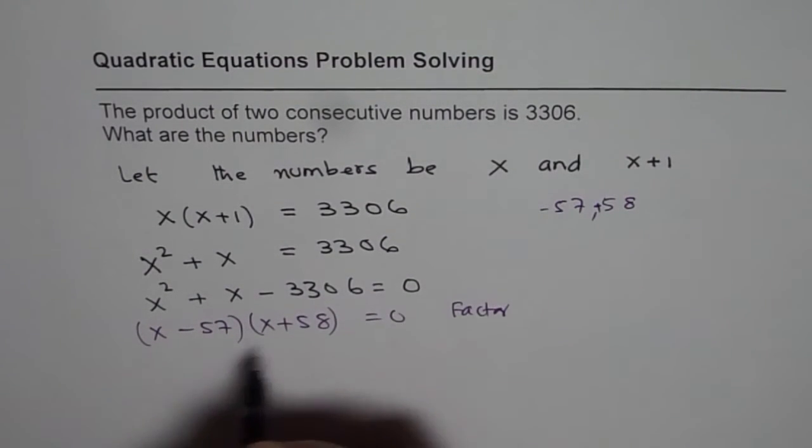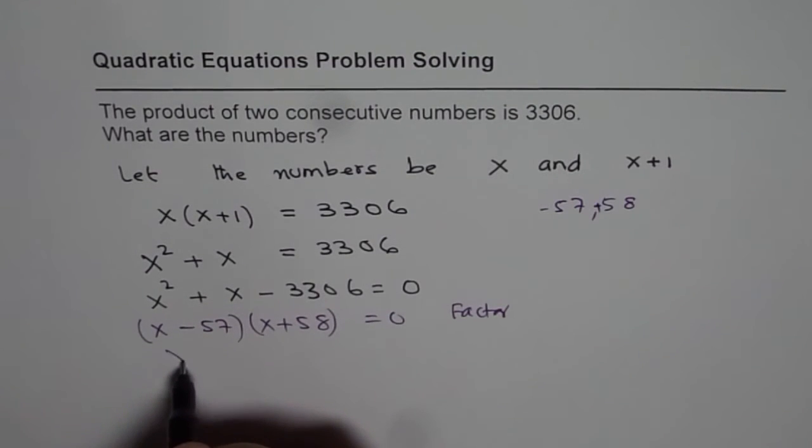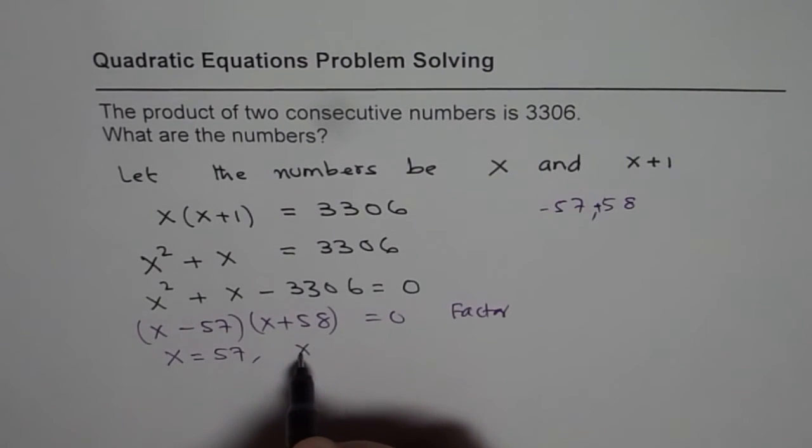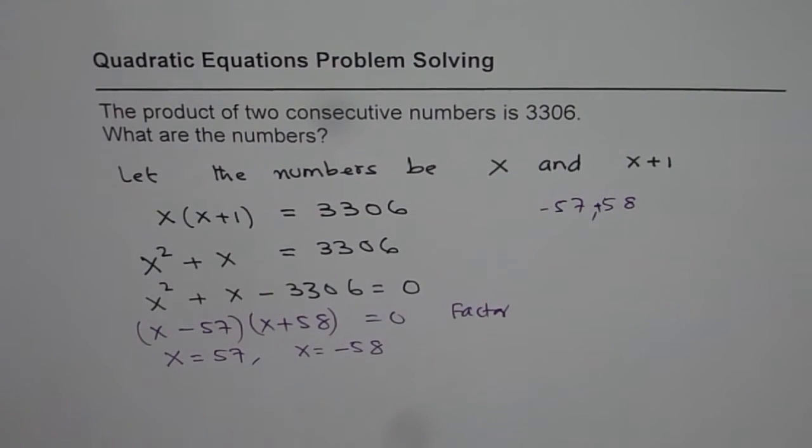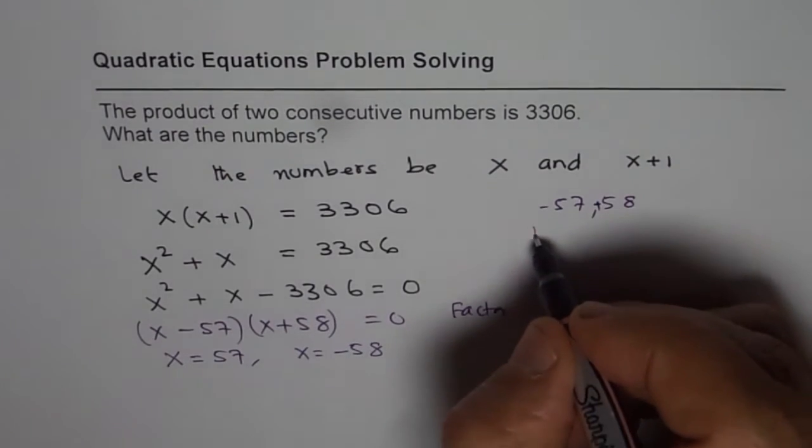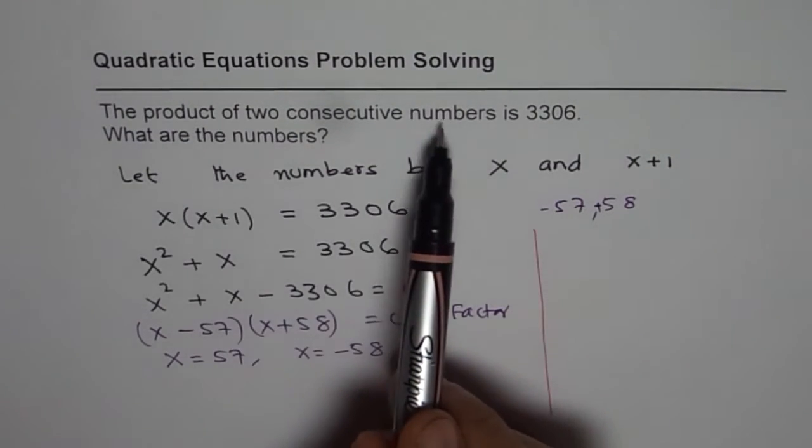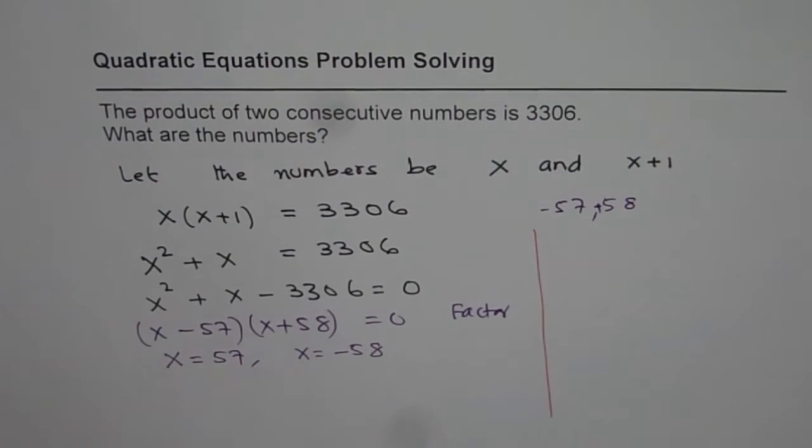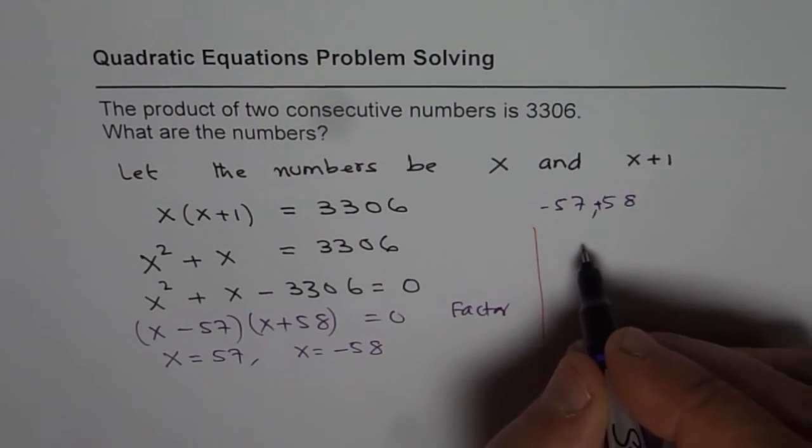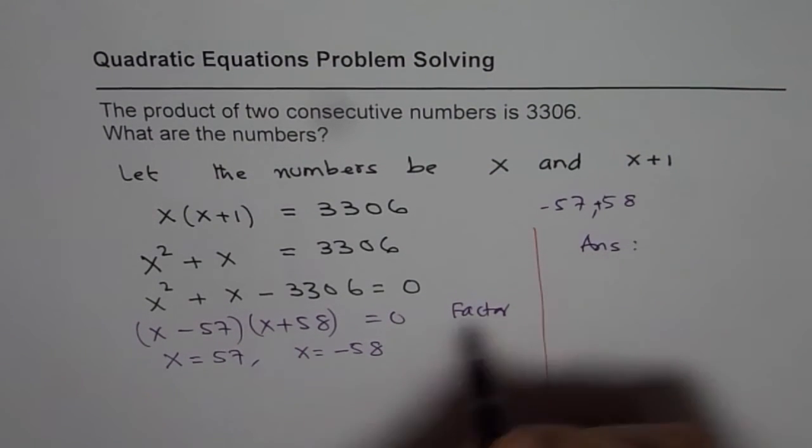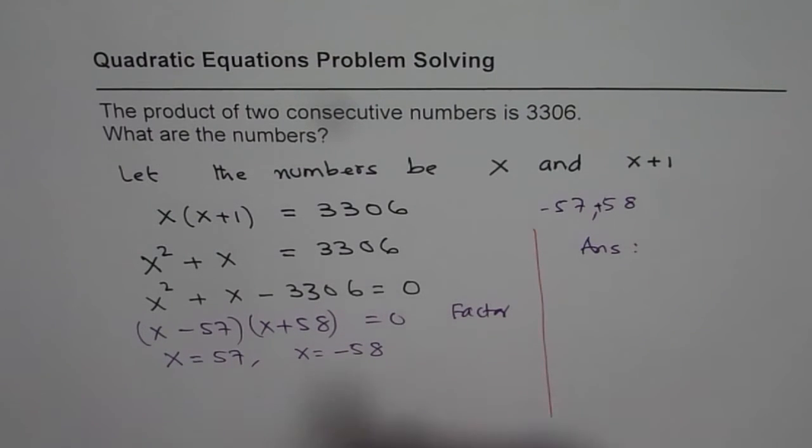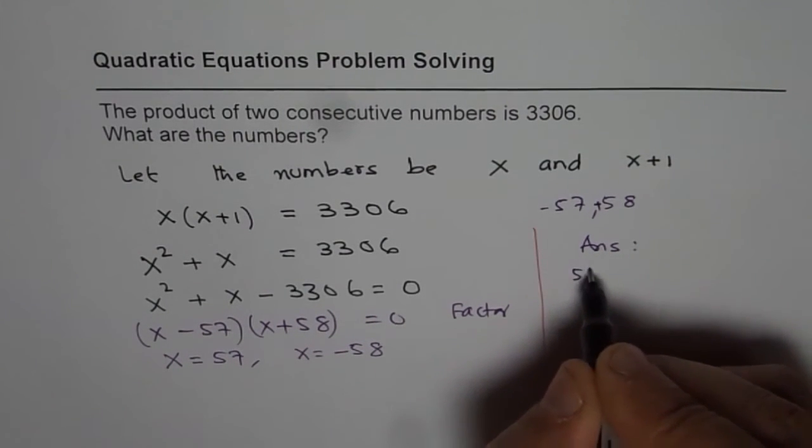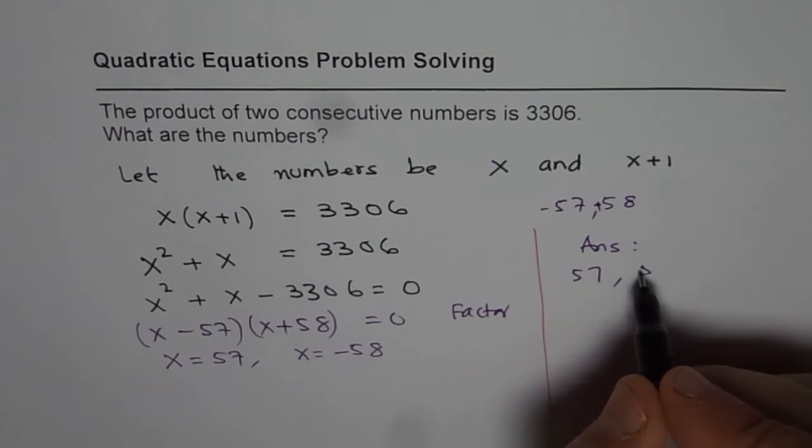Do you see that? Now, once you factor, you know it has two solutions. x could be 57 or x could be minus 58. Now, we need to write the answer properly. It says, product of two consecutive numbers is 3306. Now, what are the numbers? The numbers could be both negative or both positive. So our answer is, we have two sets of answers here. The one is, if x is 57, then the numbers are 57 and 57 plus 1, which is 58.